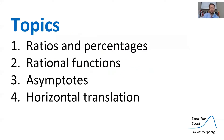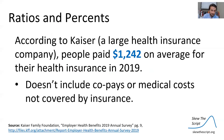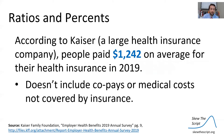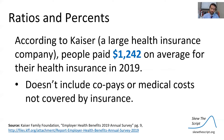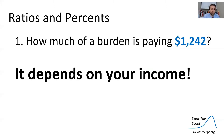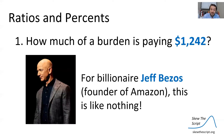We'll be starting with a discussion on ratios and percentages, kicking things off in the context of health insurance. According to Kaiser, a large health insurance company, people paid about $1,242 on average for their health insurance in 2019. This doesn't include co-pays or medical costs not covered by insurance. So let's think about how much of a burden paying that $1,242 is — well, it all depends on your income.